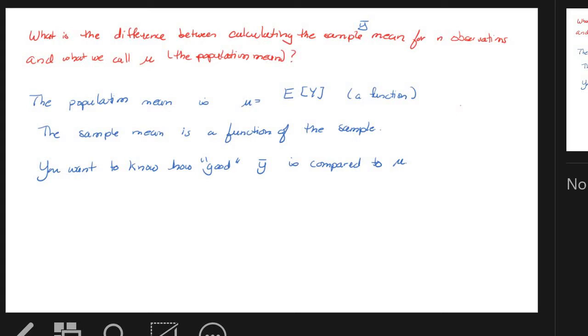So the population mean is a theoretical thing. You've been learning about it in here as a theoretical thing. It is the expected value. It's a function of the random variable. That's what it is. The sample mean is a function of the sample. So it changes as a function of the sample, which is why I made that app so people can see when I started increasing the sample, the sample mean was changing. And you want to know usually how good the sample mean is compared to the population mean.